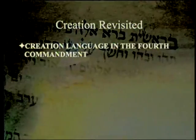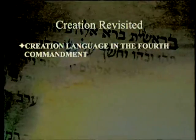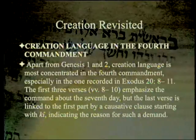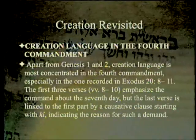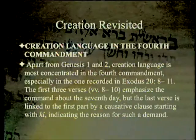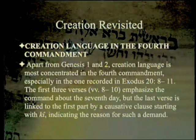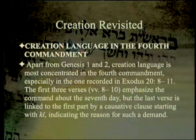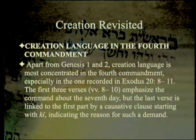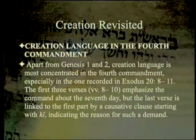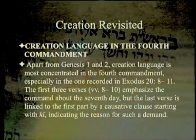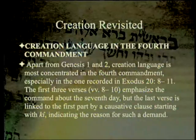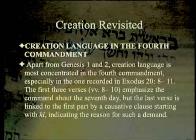Starting with the most obvious parallel: apart from Genesis 1 and 2, creation language is most concentrated in the fourth commandment, especially in the one recorded in Exodus 20:8-11. The Deuteronomy 5 account, of course, is famous for not mentioning creation.